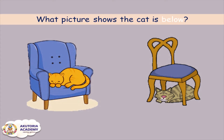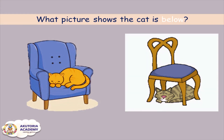What picture shows the cat is below? I can see two pictures with two chairs and two cats. On one picture, the cat is lying on the chair. On the other picture, the cat is lying under the chair. So one picture shows the cat is below. Below is another way of saying under. So in this picture, the cat is lying below the chair.